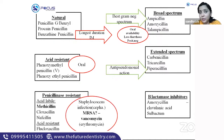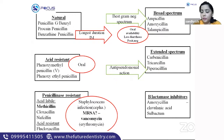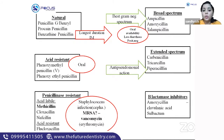Penicillinase-resistant penicillins have two sub-groups: acid-labile — methicillin, nafcillin, cloxacillin (MNC) — and acid-resistant, including flucloxacillin. Because staphylococcus releases penicillinase enzyme, a penicillinase-resistant penicillin is required to treat staphylococcal infections, and methicillin is the most common drug of choice.